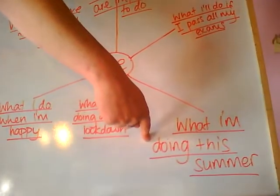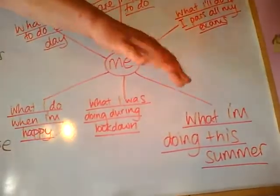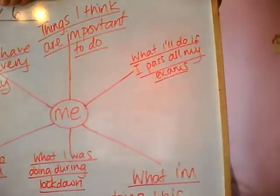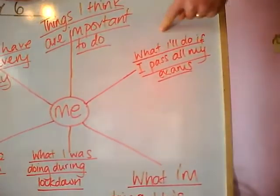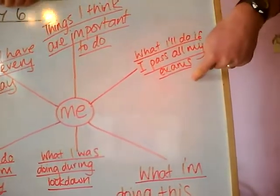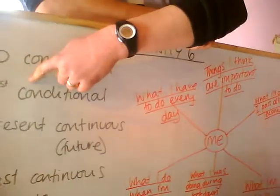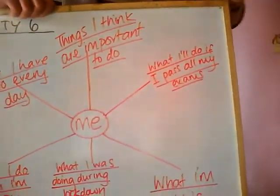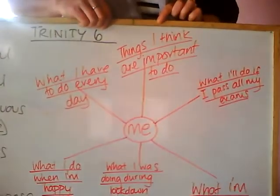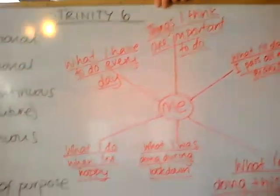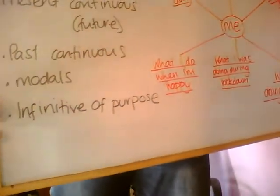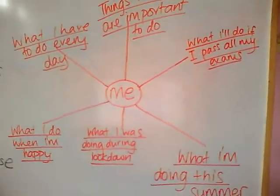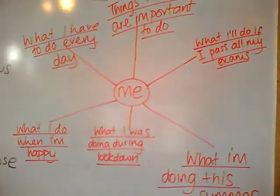'What I was doing during lockdown' — past continuous, was doing. 'What I'm doing this summer' — present continuous, but talking about my plans in the summer. Remember, because it's present continuous, it must be a fixed plan — what are you definitely going to do? 'What I will do if I pass all my exams' is first conditional: if I pass all my exams, I will blah blah blah. And finally, things I think are important to do.